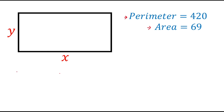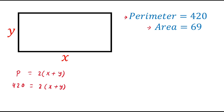We know that the perimeter of a rectangle is twice of length plus breadth, and the perimeter is given as 420, so this is equal to twice of x plus y. If we divide both sides by 2, then 420 divided by 2 gives us 210, and this is equal to x plus y.